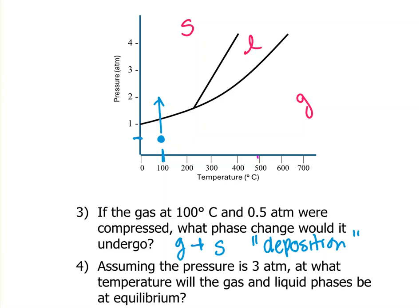Let's do the next one. We have a pressure of three atmospheres, and what temperature will the gas and liquid be at equilibrium? So I want to find the gas and liquid line.